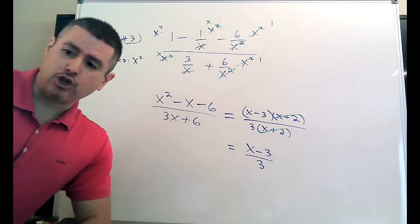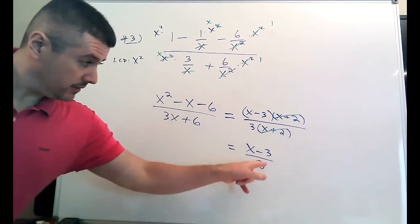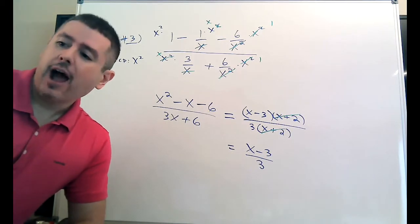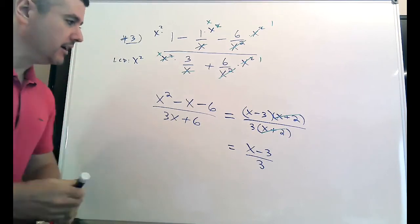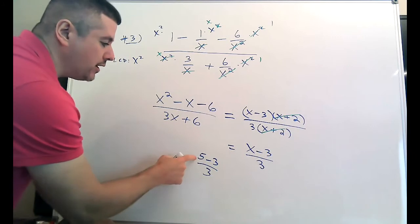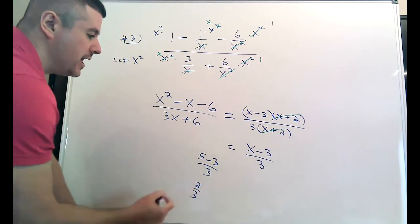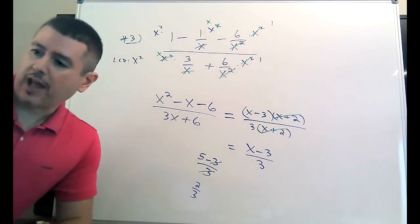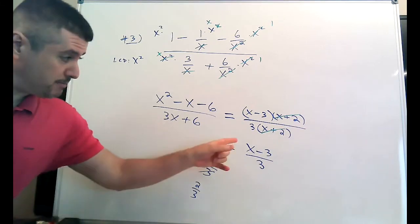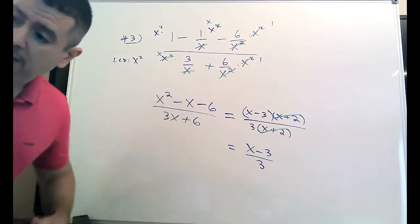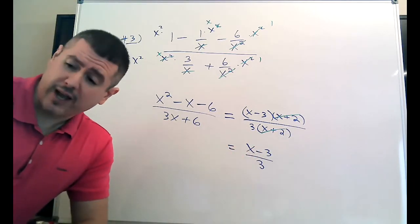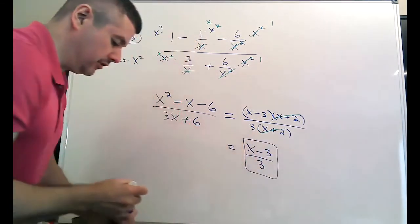This is by design — I made sure the number on the bottom was a three to tempt you. Don't cross out those threes. If you want to verify that a move is valid, make up a number for X, like X equals five. Five minus three is two, so you should get two over three. Now cross out the threes and see if you get the same thing — you don't. So if a move seems questionable, plug in a number and test it. If you don't get the same thing, the move is bogus. So this is your final answer.